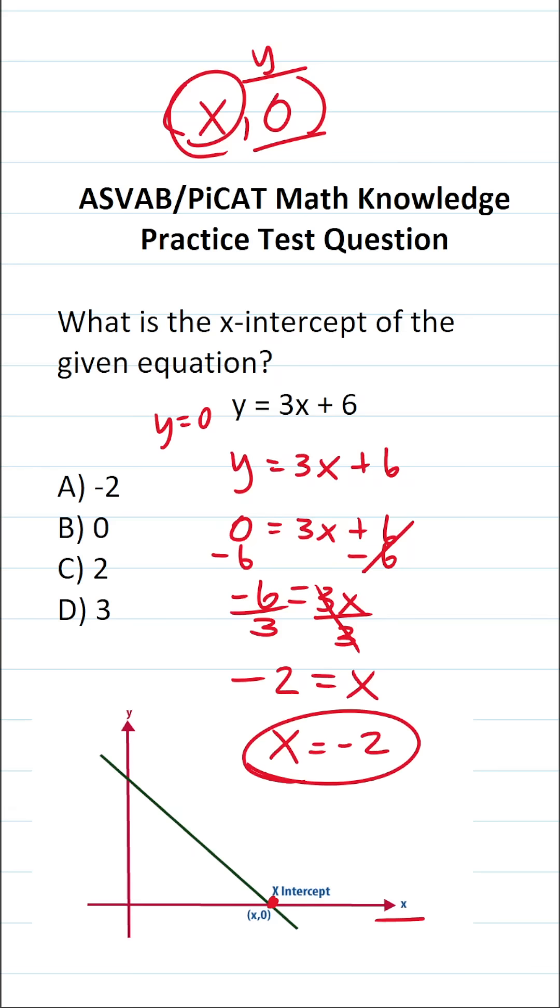In other words, our x-intercept is negative 2. That means that the point at which this line crosses the x-axis is going to be negative 2, 0. So again, this one is A.